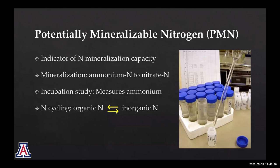Before it becomes ammonium or nitrate, ammonium generally converts into nitrate. We measure the ammonium that is bound in the soil and not available to the plant — it's a reservoir of nitrogen in your soil. You might have data on nitrates and NPK available, but PMN tells you what the reservoir is — how much nitrogen you actually have, not only for the plant but also for the biology.